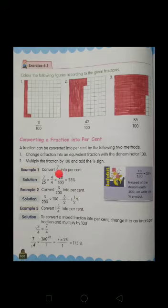25. So firstly change this fraction into an equivalent fraction with the denominator 100. So 7 upon 25 is multiplied by 4 upon 4 in order to make the denominator 100. And then multiply the fraction by 100 and then add percent sign to the answer.